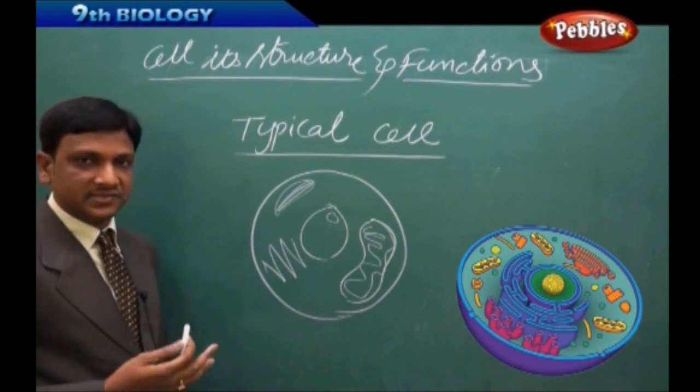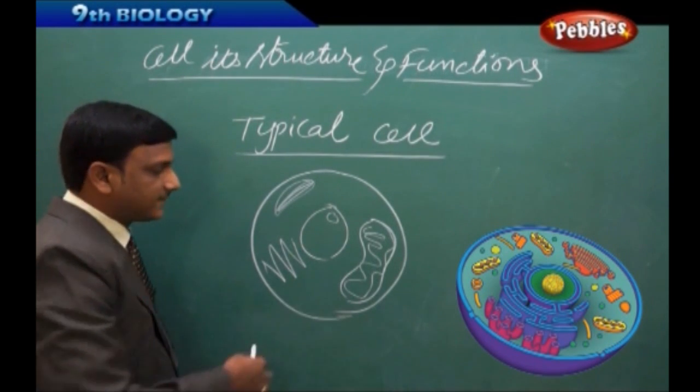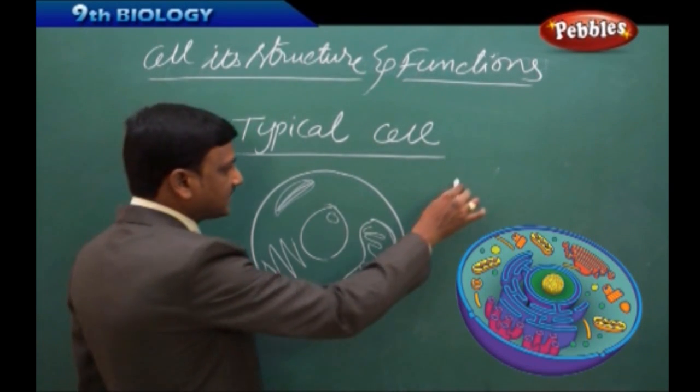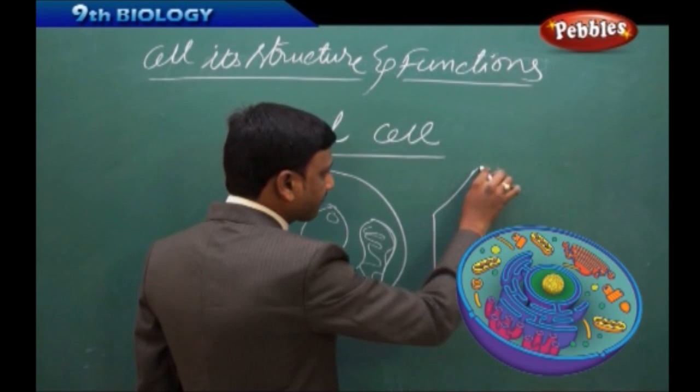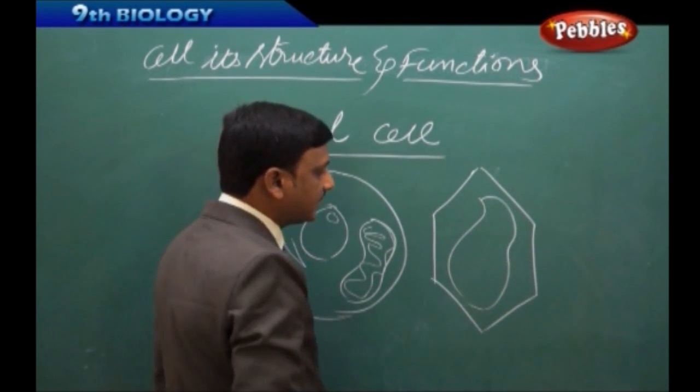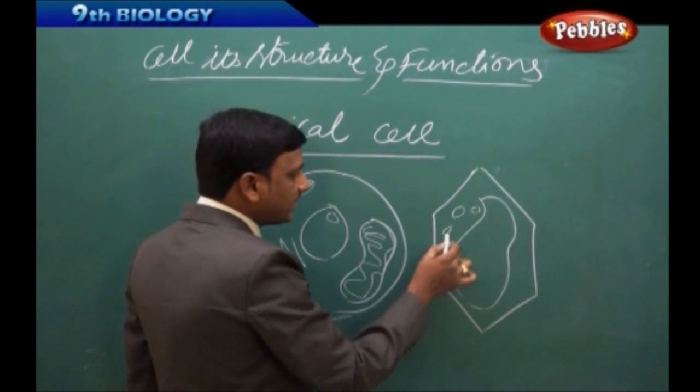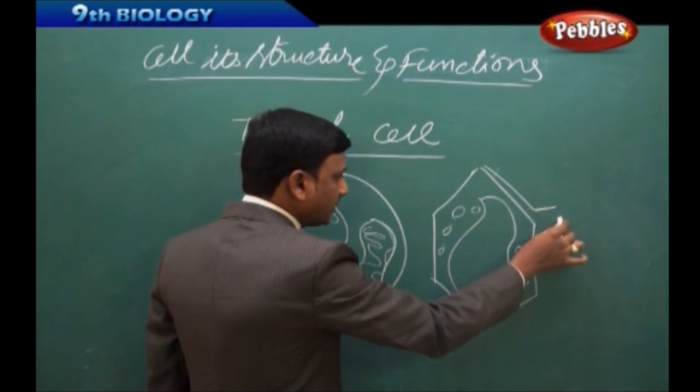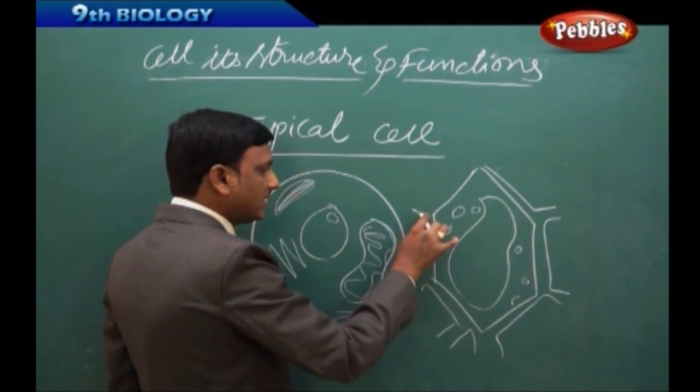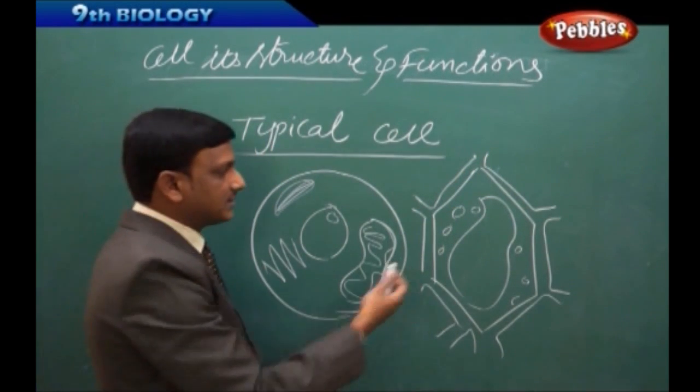So, a typical cell is a generalized cell diagram which represents all the different cell organelles that exist in an animal cell or a plant cell. If you take a plant cell example, when we are drawing a plant cell, basically, we draw a big vacuole at the center and we draw some kind of plastids and we draw a thick cell wall. This is a generalized diagram of a plant cell. So, we call it as a typical cell.